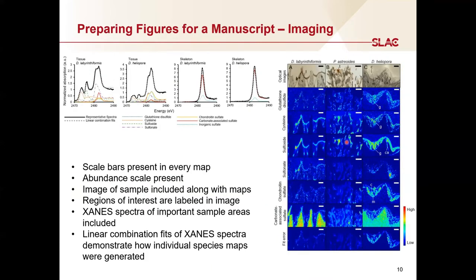Let's now look at some best practices when reporting imaging data. In this figure, the researchers were characterizing different sulfur chemical species in a heterogeneous sample. All the maps in the figure include a scale bar, and there is also an abundance scale bar included. The figure includes an optical image, which is useful when the sample has distinct features. Regions of interest are labeled — in this case S and T for skeleton and tissue regions — allowing you to clearly see where the corresponding XANES spectra for the tissue and skeleton were collected. Lastly, the XANES include a linear combination fit of all the standard spectra to the data, which clearly shows how these species maps were derived from the XANES data.